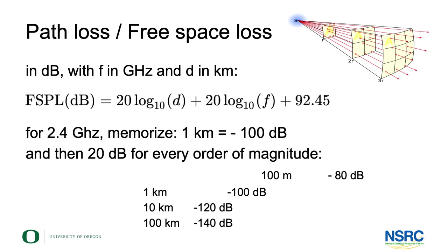The factor 20 comes from the fact that it's not only distance that matters but a surface area — so we get a factor of two times ten, combining the squared distance relationship with the factor already in the definition of the decibel.